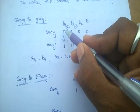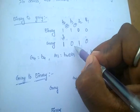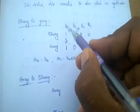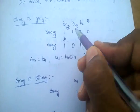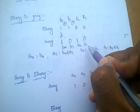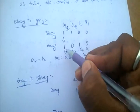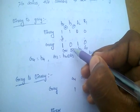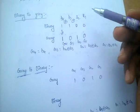That means: write down the first digit — the MSB — as it is. For the remaining bits, find the exclusive-OR between adjacent bits. That gives G4, G3, G2, G1 — the gray code bits. Specifically: G4 equals B4; G3 equals B4 XOR B3; G2 equals B3 XOR B2; G1 equals B2 XOR B1.